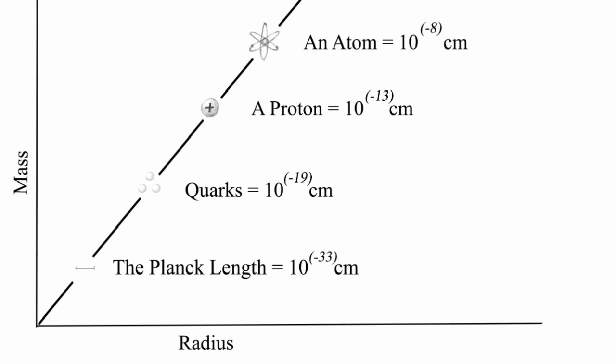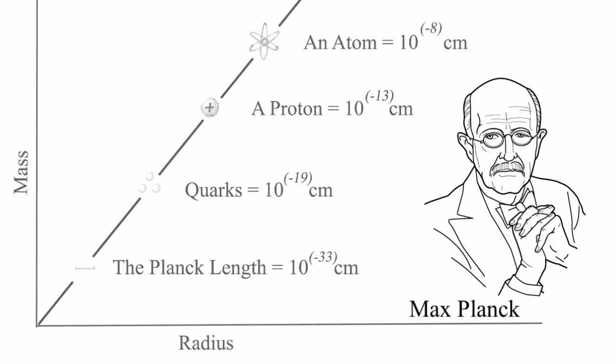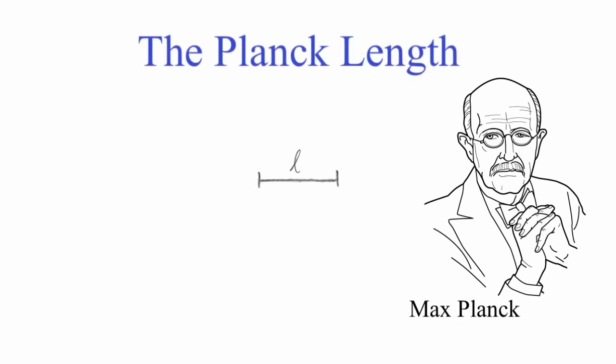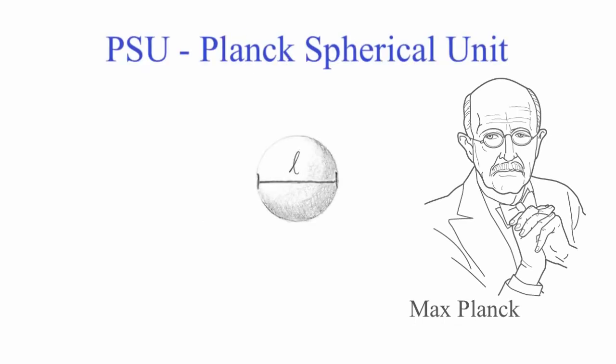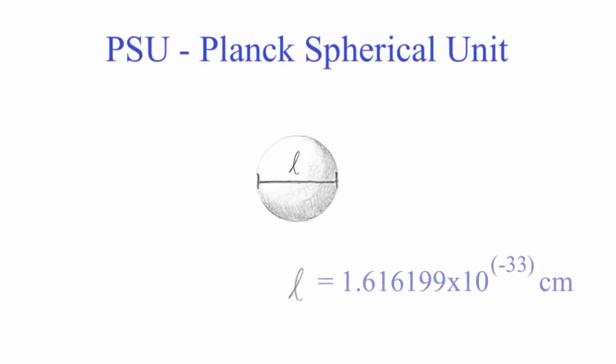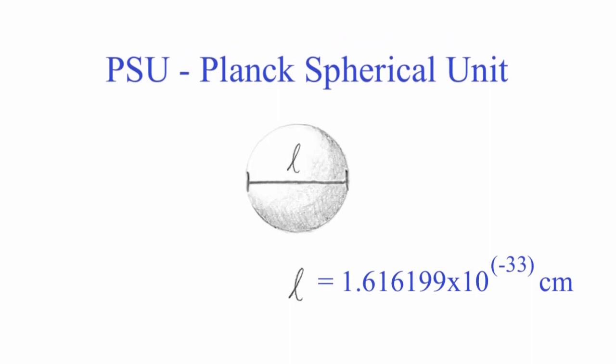10 to the minus 33 centimeters, discovered by Nobel Prize-winning physicist Max Planck. Now, if we take this length and we make it the diameter of a sphere, we now have one Planck spherical unit, or one PSU. This is a brand new unit of measurement in the world of science, the Planck spherical unit, the PSU.